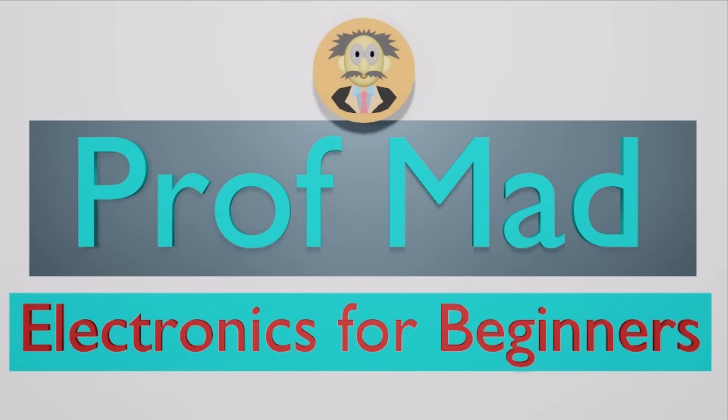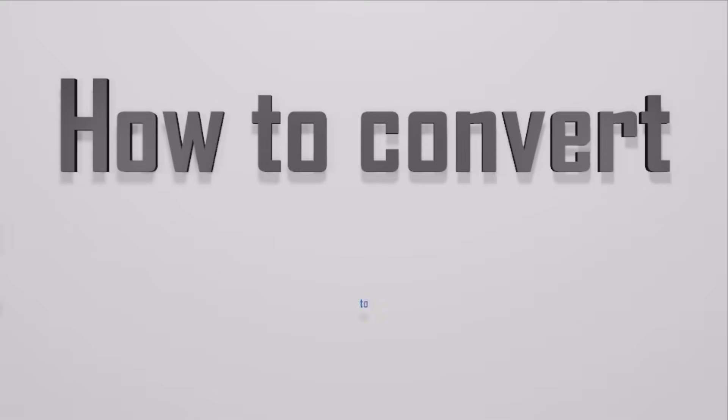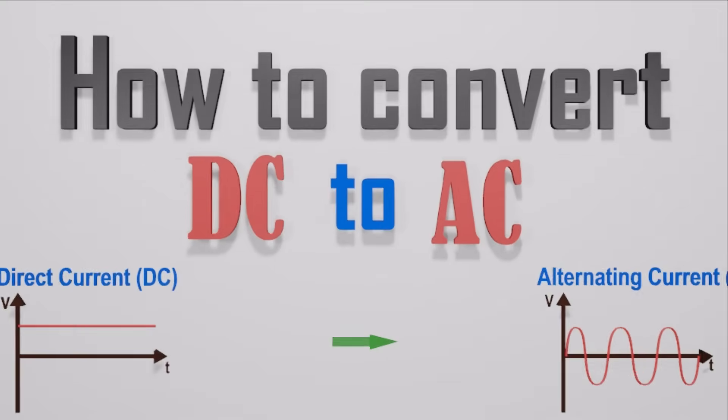Welcome to Professor Matt, Electronics for Beginners. Today, we are going to talk about how to convert direct current into alternating current.